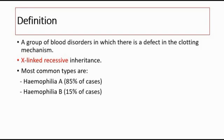The most common types of hemophilia are hemophilia A and hemophilia B, where hemophilia A consists of 85% of the cases and hemophilia B consists of 15% of the cases. Hemophilia A is a deficiency in coagulation factor VIII, whereas hemophilia B is a deficiency in factor IX.